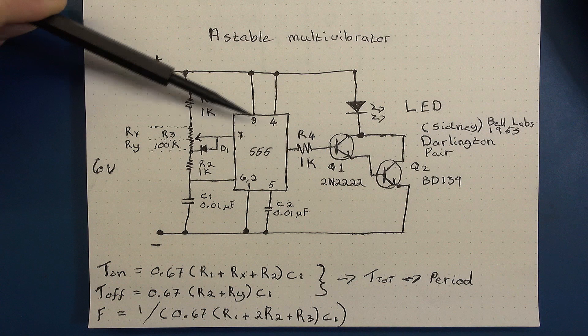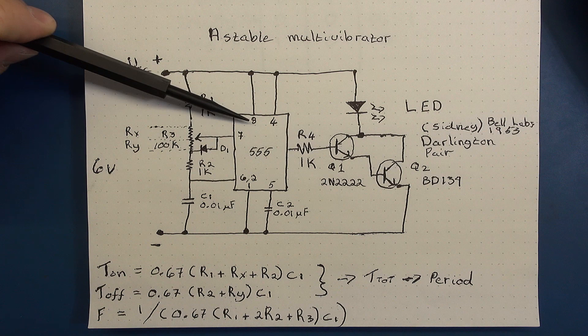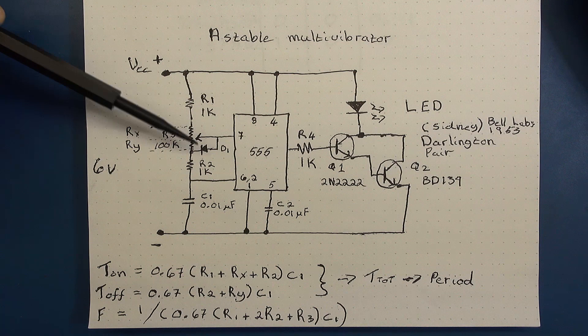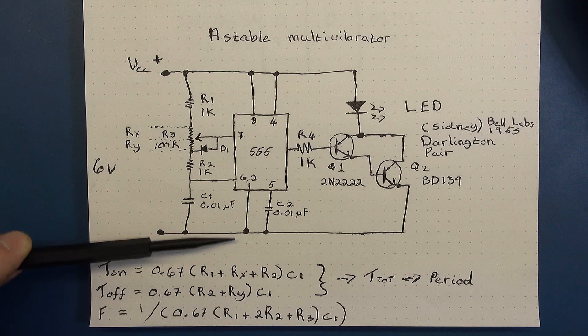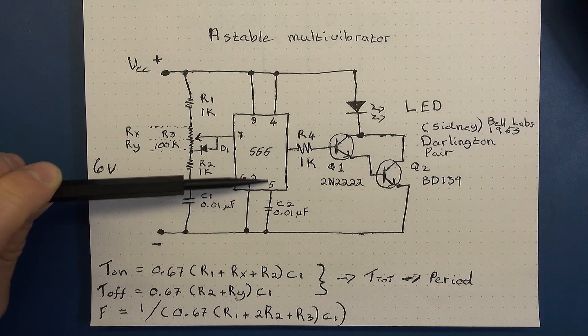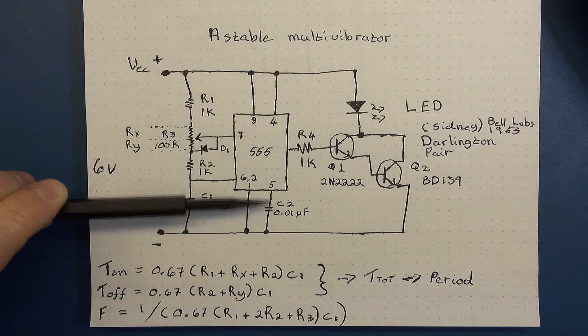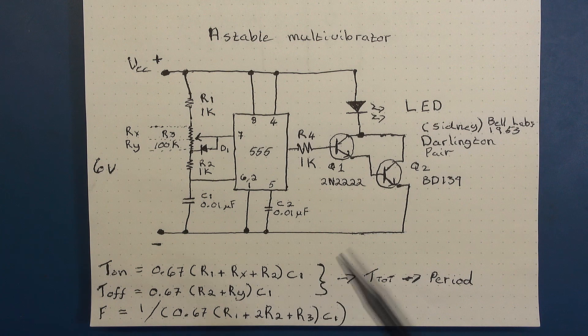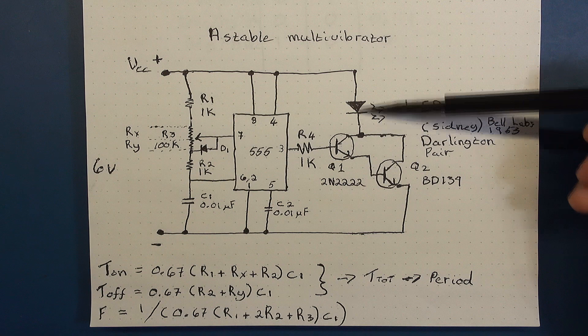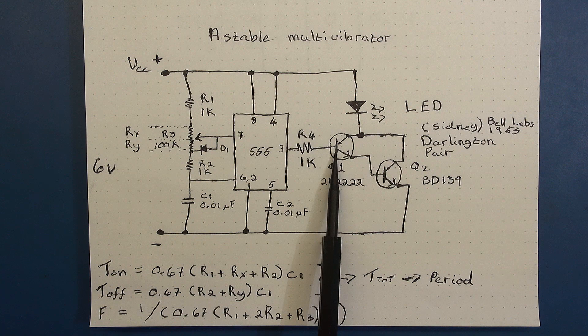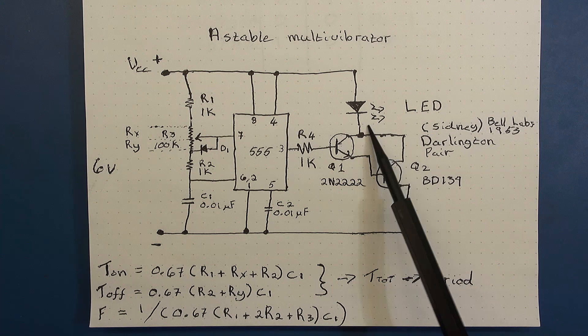At the center of this circuit we've obviously got the 555 timer. The pins are labeled as they're connected in the circuit, not sequentially. Pin 8, which is the supply, goes up to the positive rail VCC. Pin 4 is the reset — we don't want to reset during operation so it's tied high. Pin 1 goes down to the negative supply of VCC. Pin 5 is the control pin, and for correctness you should use a decoupling capacitor and tie that down to ground. We've then got the output, which should be labeled as pin 3 — that's our output and it's going to drive a transistor which ultimately drives our LED.